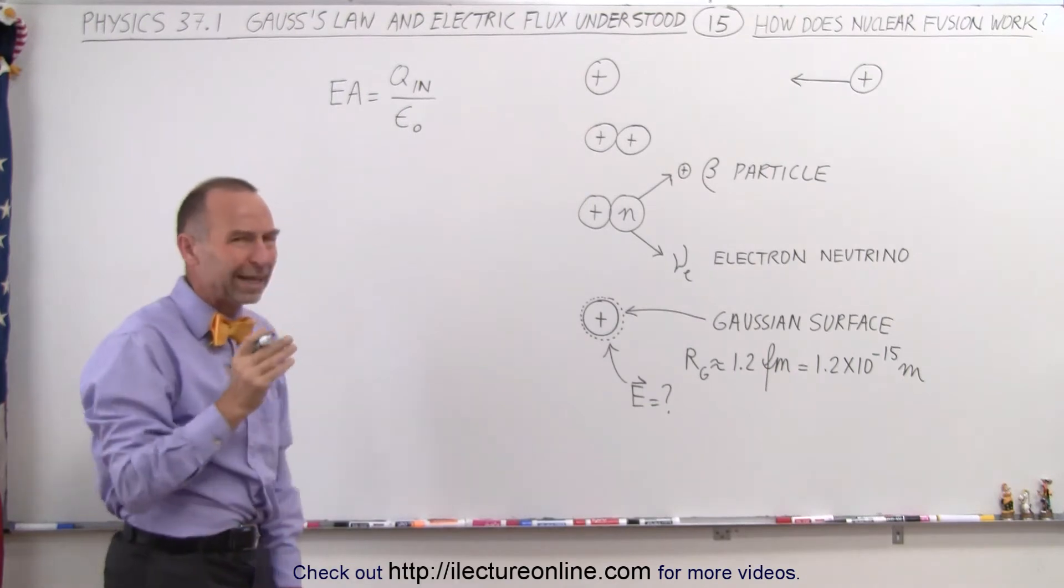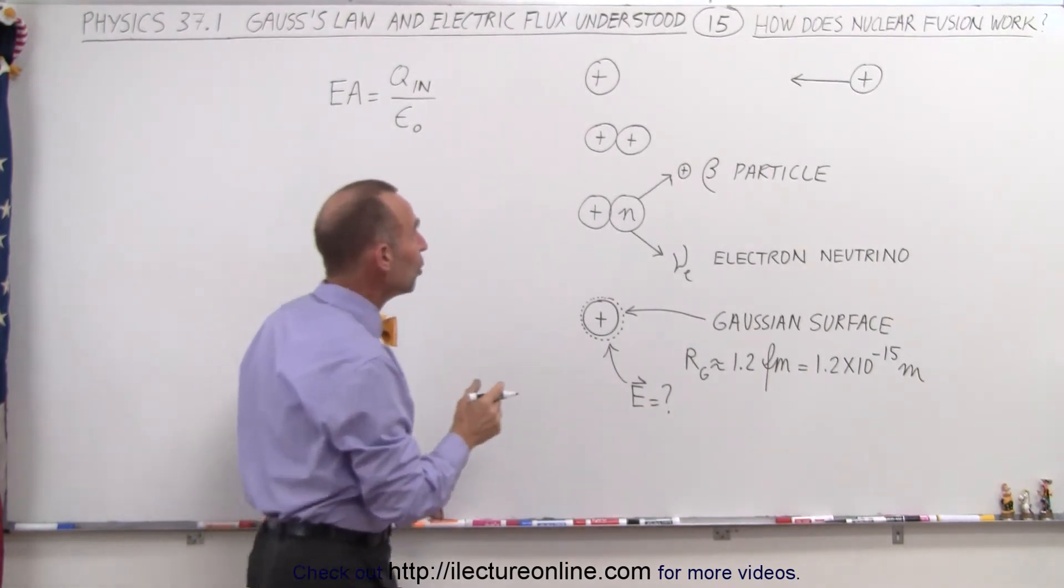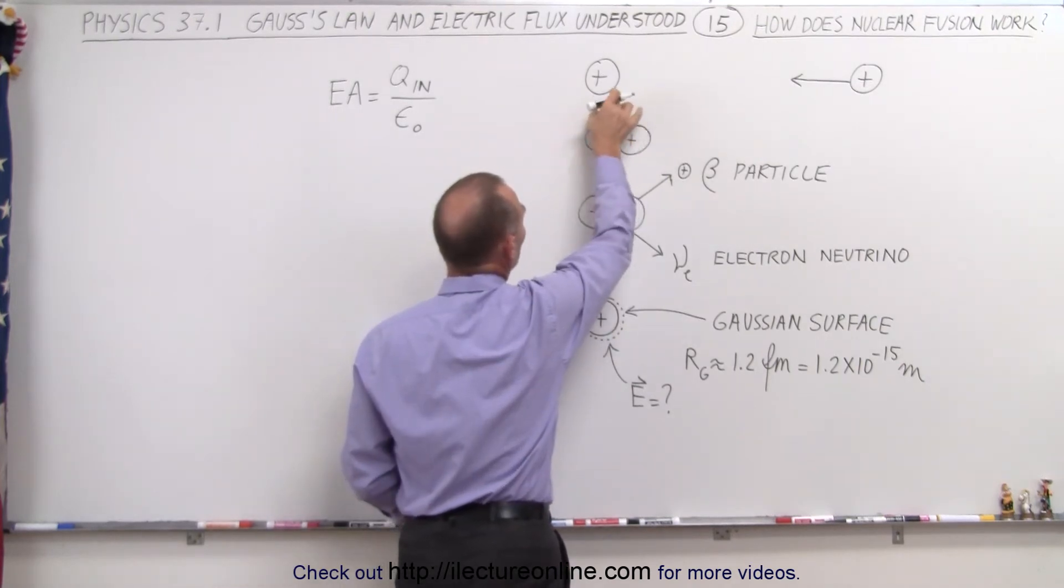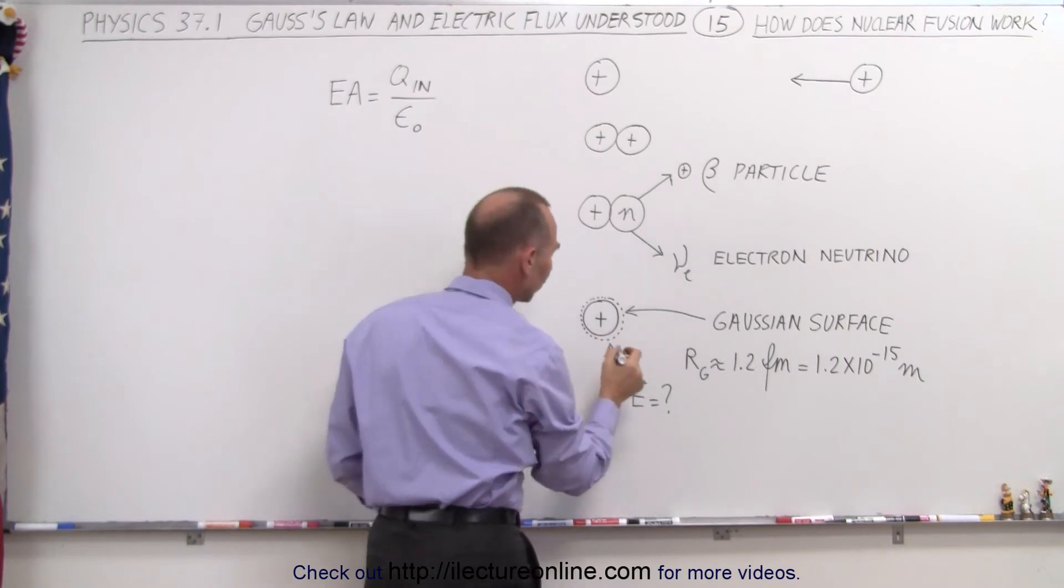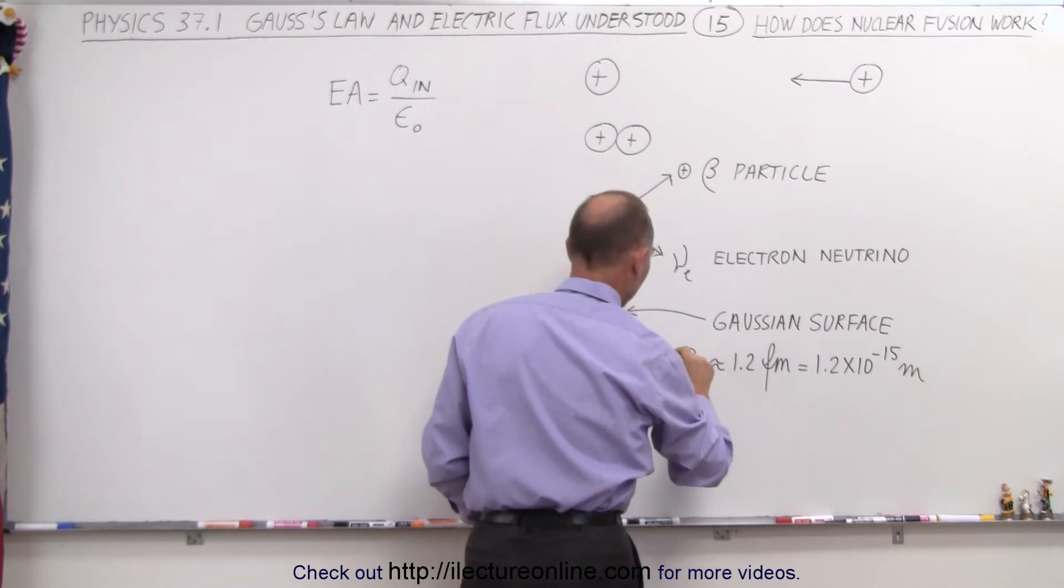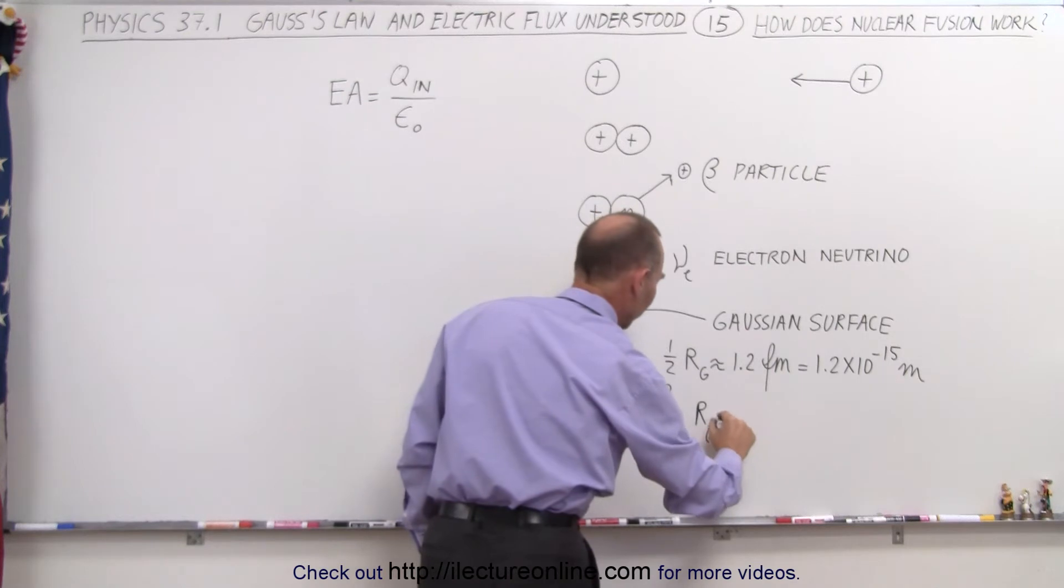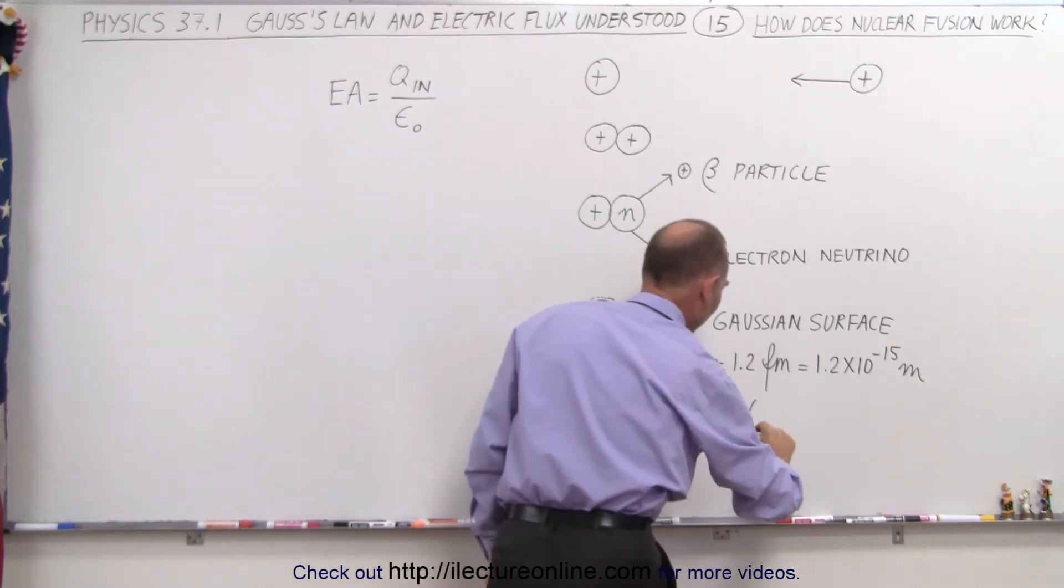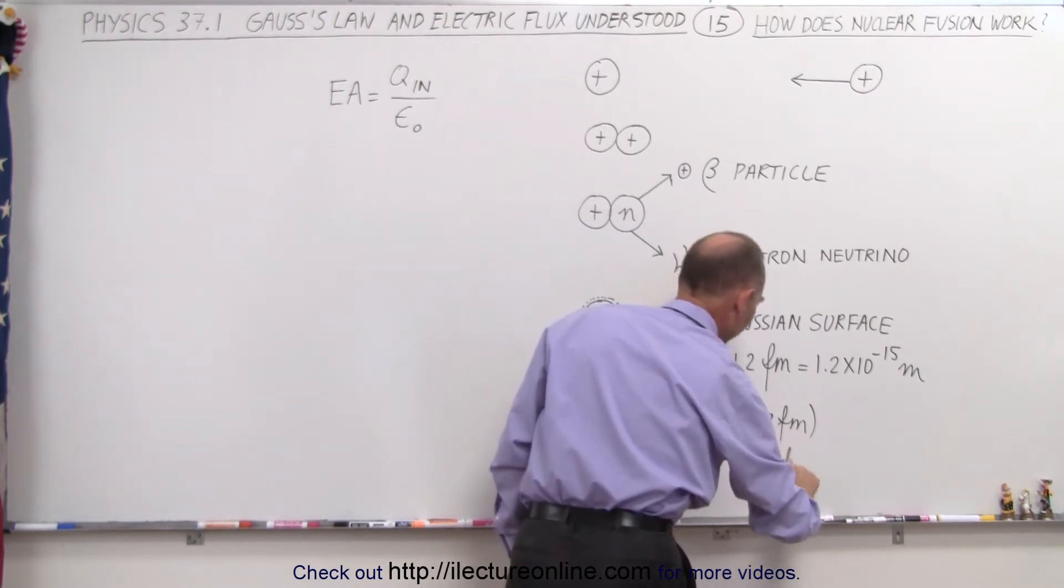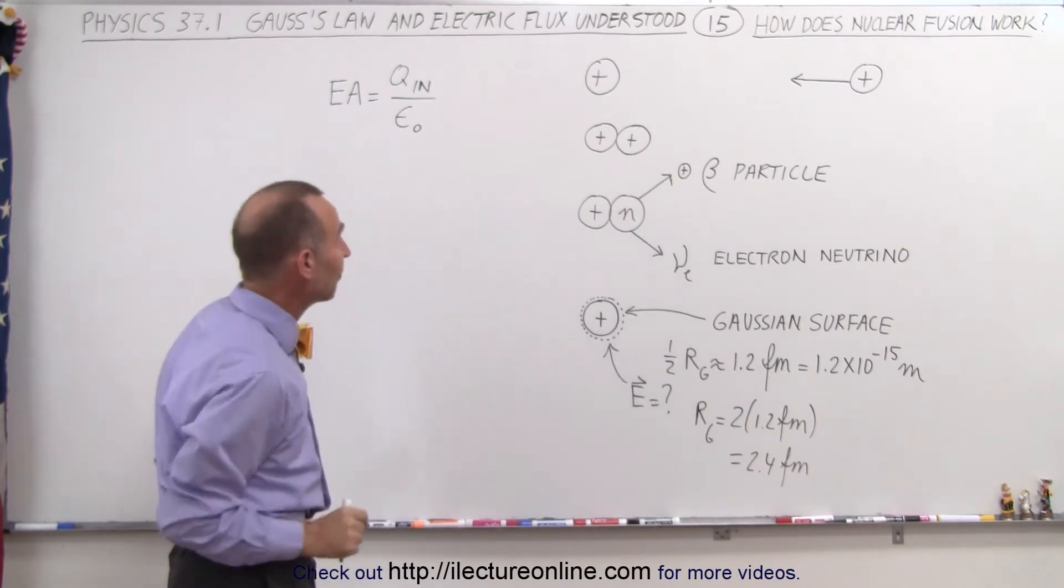So we know that we have E times A is equal to the Q inside divided by epsilon sub n. Now, actually what I need to do is adjust that a little bit, because notice for the two protons to be this close together, you're basically talking about two radii. So the Gaussian surface basically should be twice that number. So one half the radius of the Gaussian surface is that. So the radius of the Gaussian surface must actually be 2 times 1.2 femtometer, which is 2.4 femtometer, because that's as close as two protons can get.